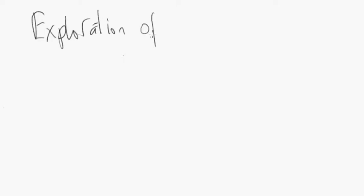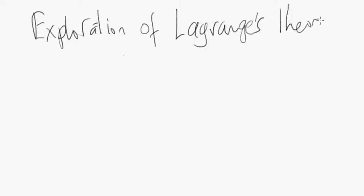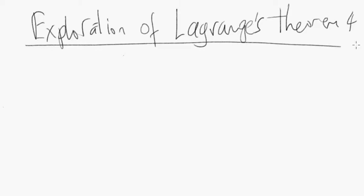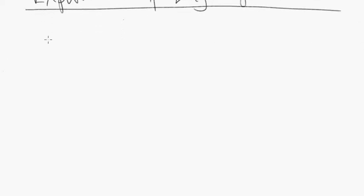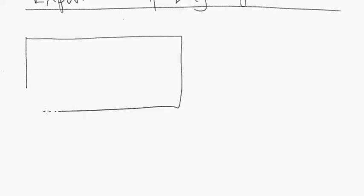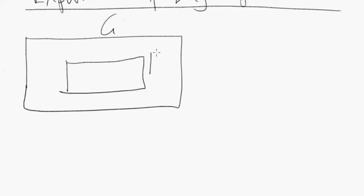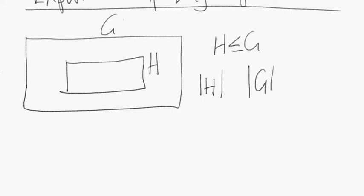Welcome — this is Part 4 of our exploration of Lagrange's theorem. What is Lagrange's theorem? It talks about the following idea: suppose we have some finite group G, we pick some subgroup H of G. Our question is: what is the relationship between the cardinality of H — the order of H — and the order of G? In particular, does the order of H divide the order of G?